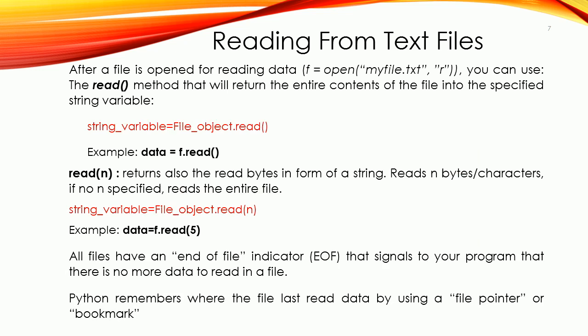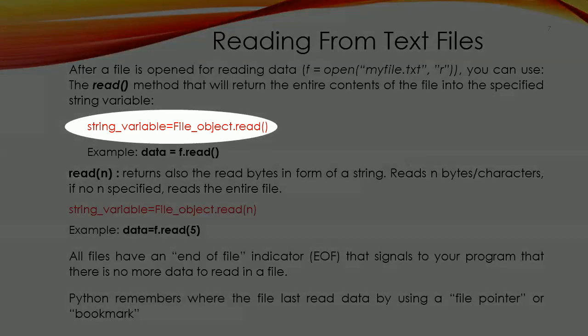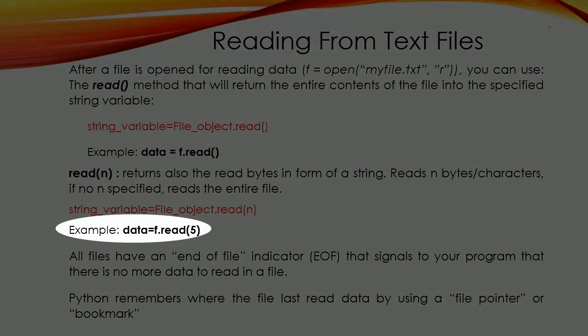How to read files in Python? We start with how to read from a text file. To read a text file in Python, we must open the file in reading mode. Then, using the read() method, it will return the entire content of the file into a specified string variable — in this example, the variable is called 'data'. The read() method also allows us to read a specified number of characters from a file and return them as a string. For example, file.read(5) will return 5 characters from your file.